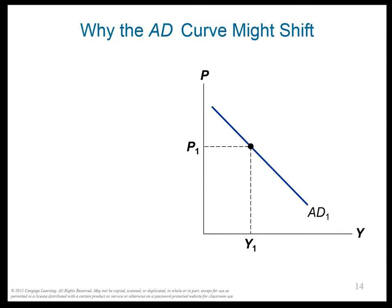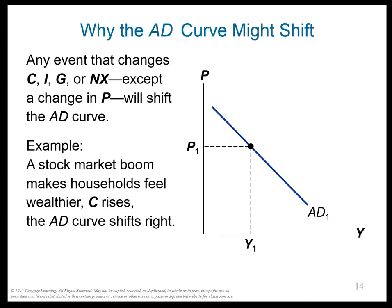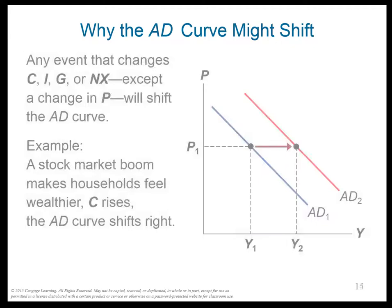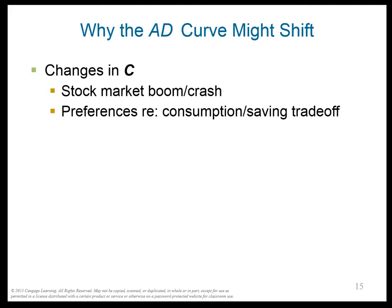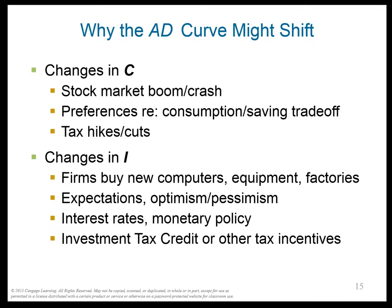So why would the AD curve shift? Anything that changes C, I, G, or NX — except for P — will shift the AD curve. A stock market boom makes people feel richer, their consumption rises, and that makes the AD curve shift to the right. Things that change C might be a stock market boom or crash, preferences regarding the consumption-saving tradeoff, or tax hikes or cuts.